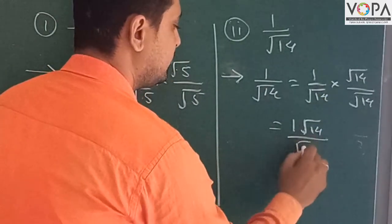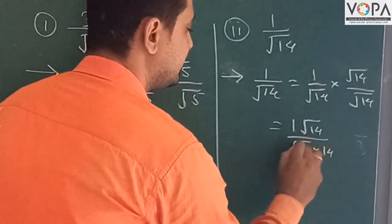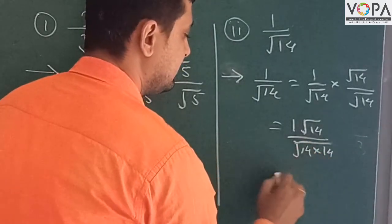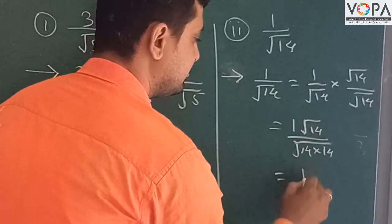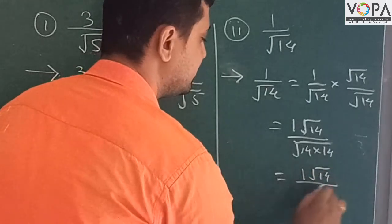Upon root 14, root 14 is the rationalization factor. Once upon root 14 is root 14.